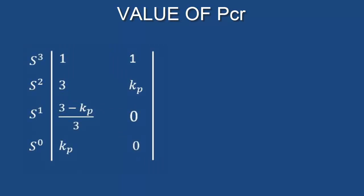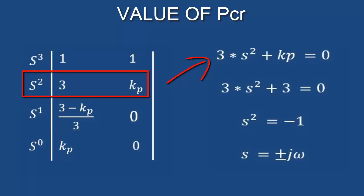Now we want to find the value of PCR at this gain value. To find it, we need to define the auxiliary equation from the Routh array. If we put Kp equal to three in the array, the third row will become zero, so the auxiliary equation obtains from the second row like this.